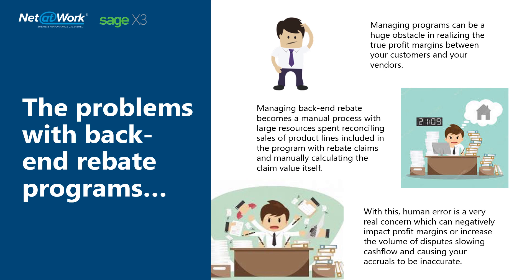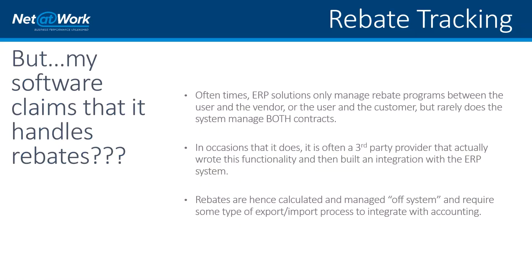Managing back-end rebates can be a huge obstacle in realizing true profit margins between your customers and your vendors. If you're the distributor, managing these programs becomes a manual process often done in Excel, with large resources spent reconciling product line sales with rebate claims and manually calculating claim values. Because these things are done manually, they're very prone to human error, which is a real concern because it could negatively impact profit margins. Even a small error in the calculation can result in disputes with the supplier, slowing cash flow and causing inaccurate accruals.